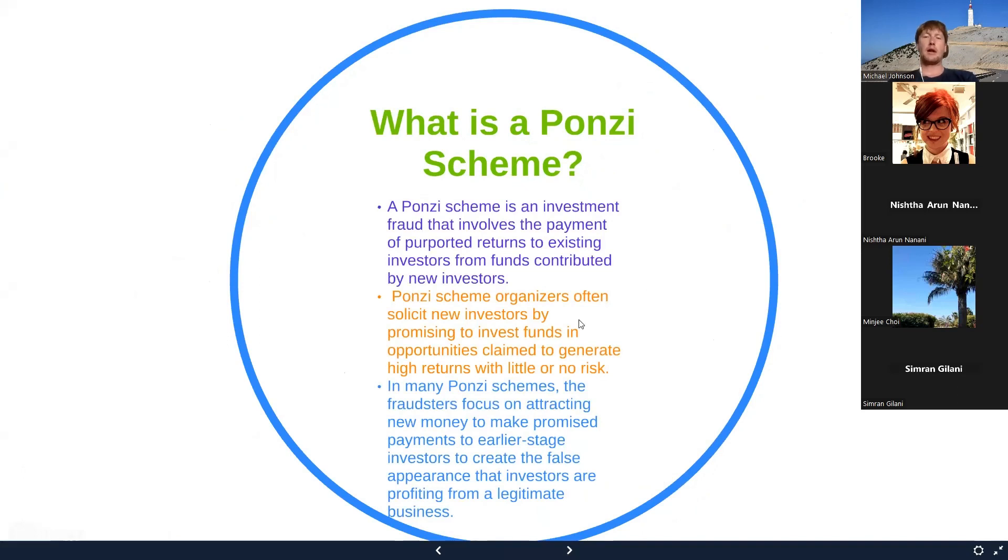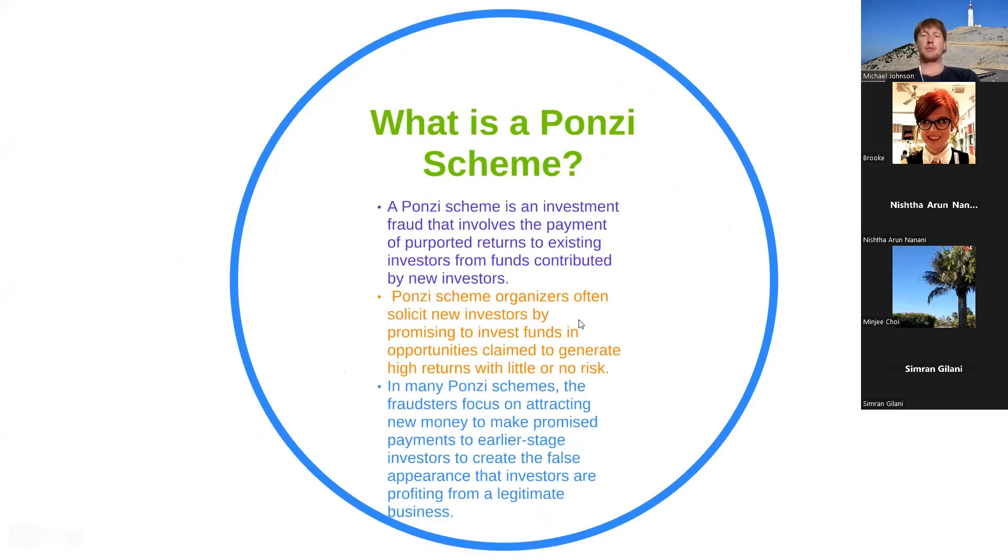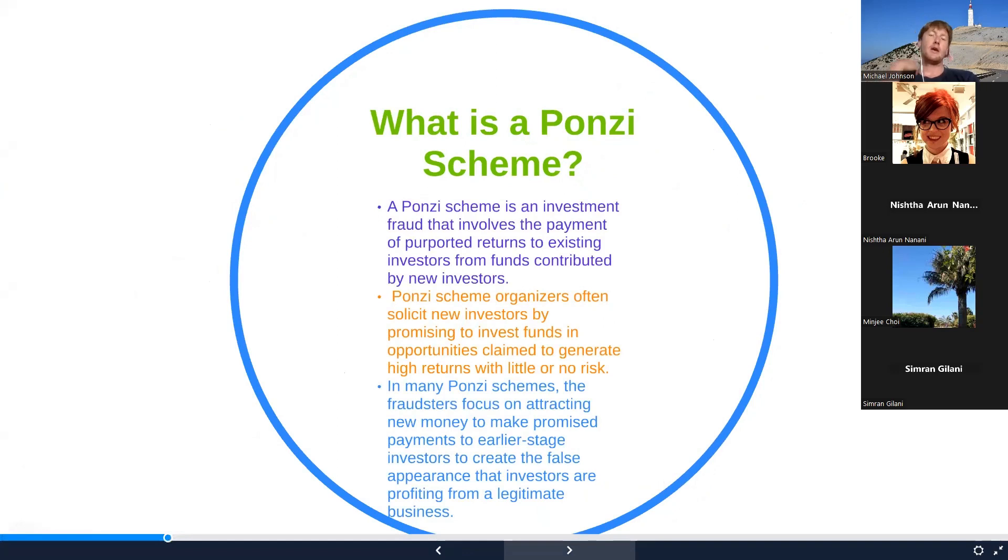New investors. So Ponzi scheme organizers often solicit new investors by promising to invest funds in opportunities claiming to generate high returns with little or no risk. In many Ponzi schemes, the fraudsters focus on attracting new money to make promised payments to earlier stage investors to create the false appearance that investors may be profiting from a legitimate business.